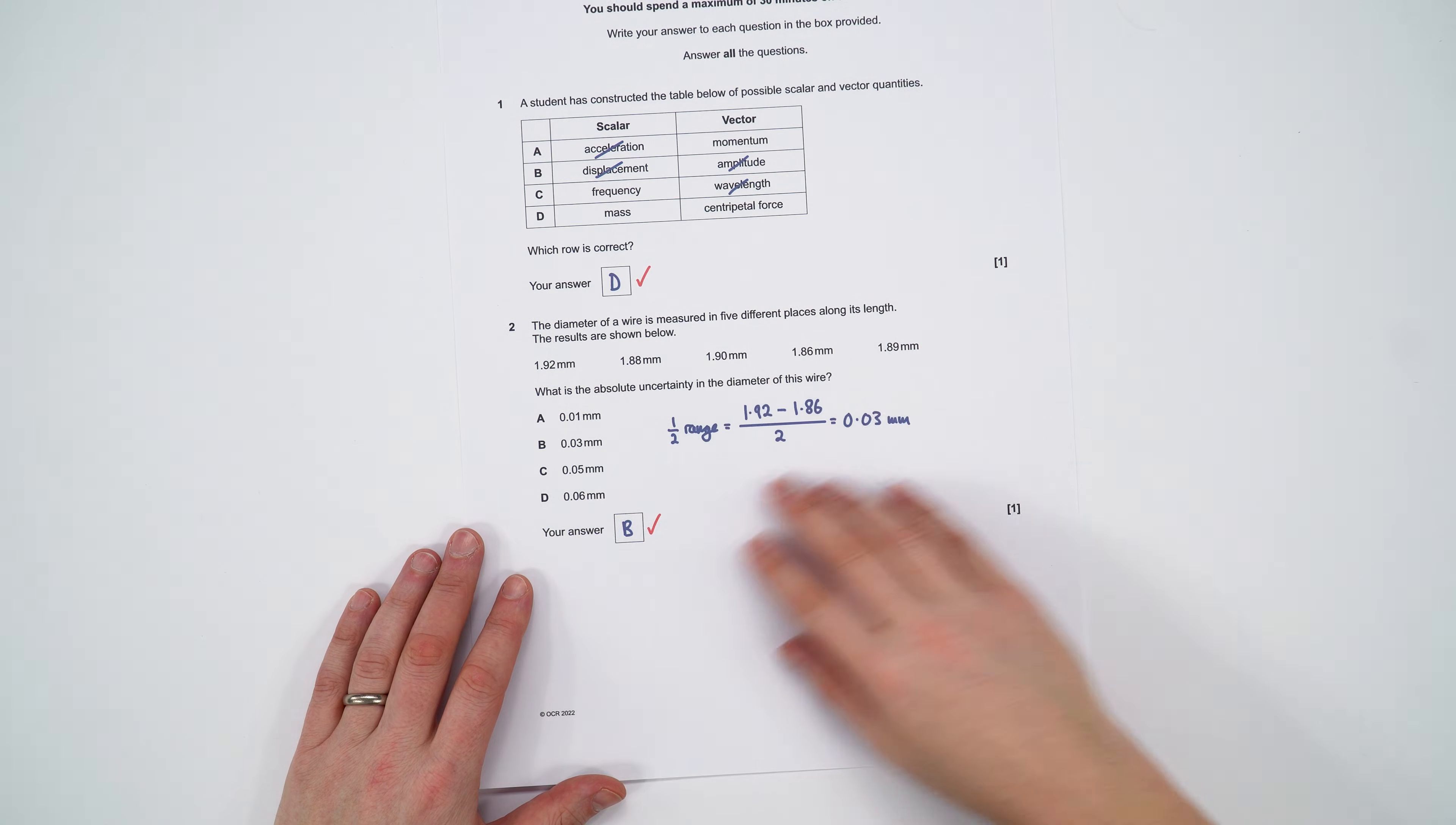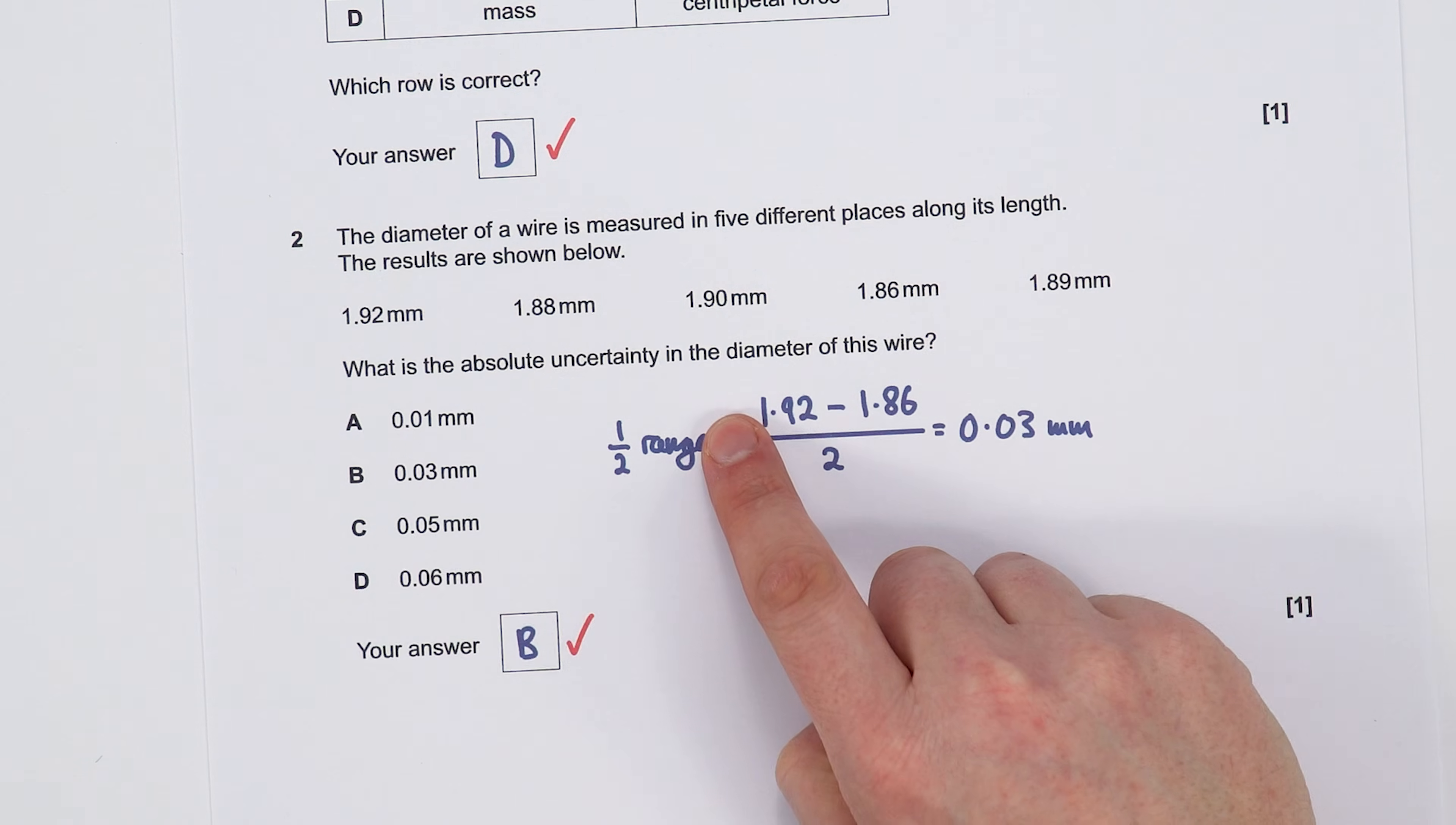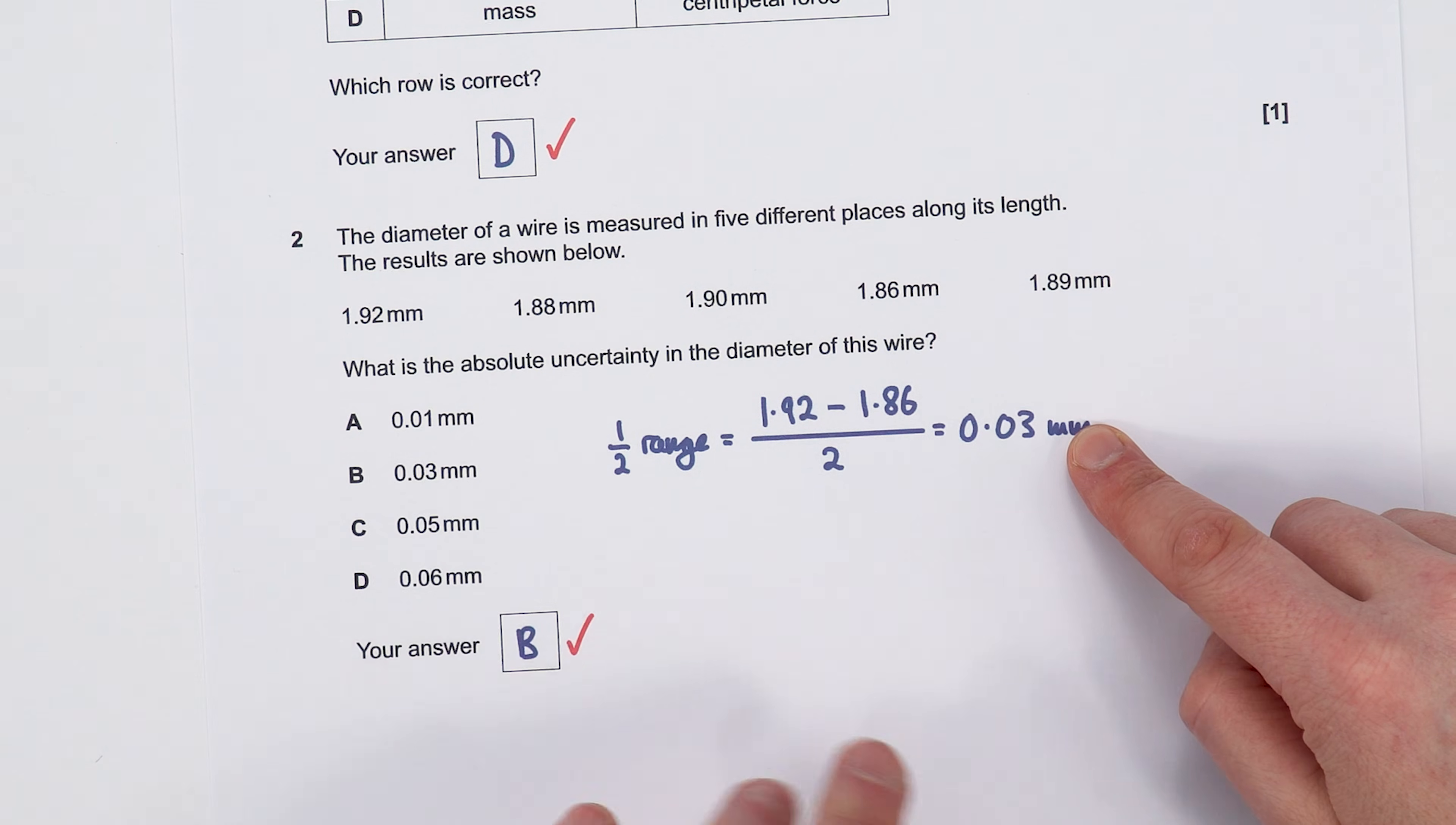I've been doing lots and lots of worked examples and you can find all of these over at A-level physics online. But this question here, the first one, is about the diameter of a wire which is measured in five different places along its length, and so we've got a load of data and then the first question is about the absolute uncertainty. So the absolute uncertainty is going to be equal to half the range which in this case was 0.03.